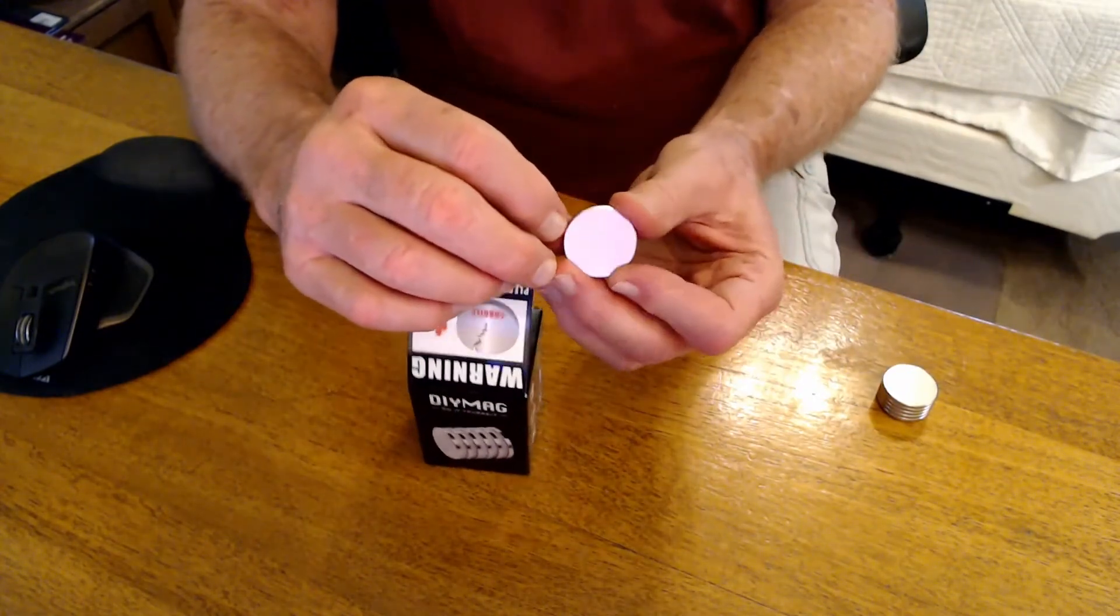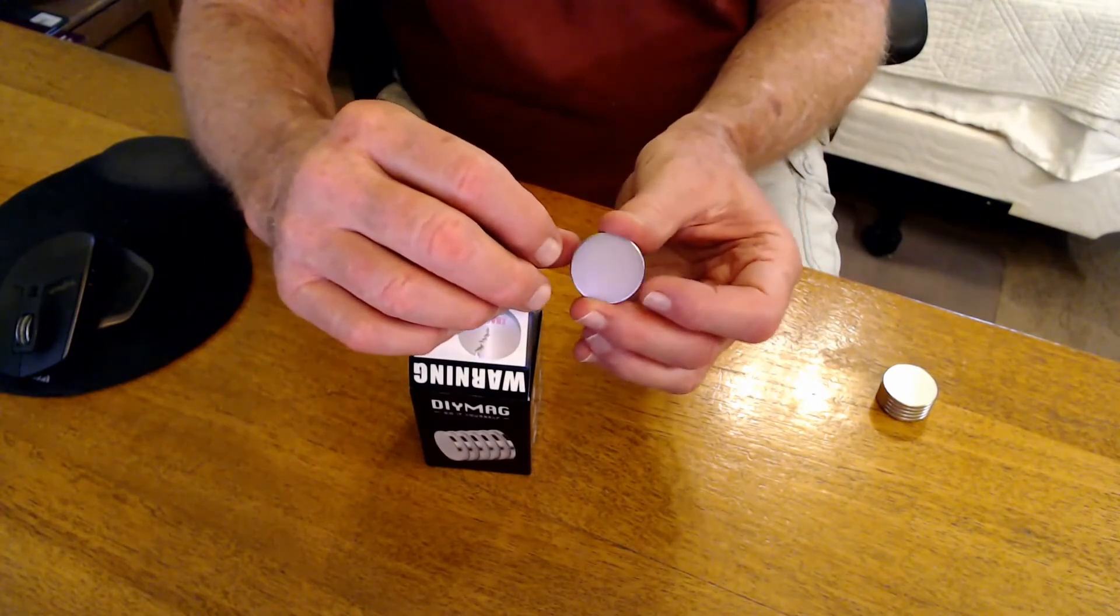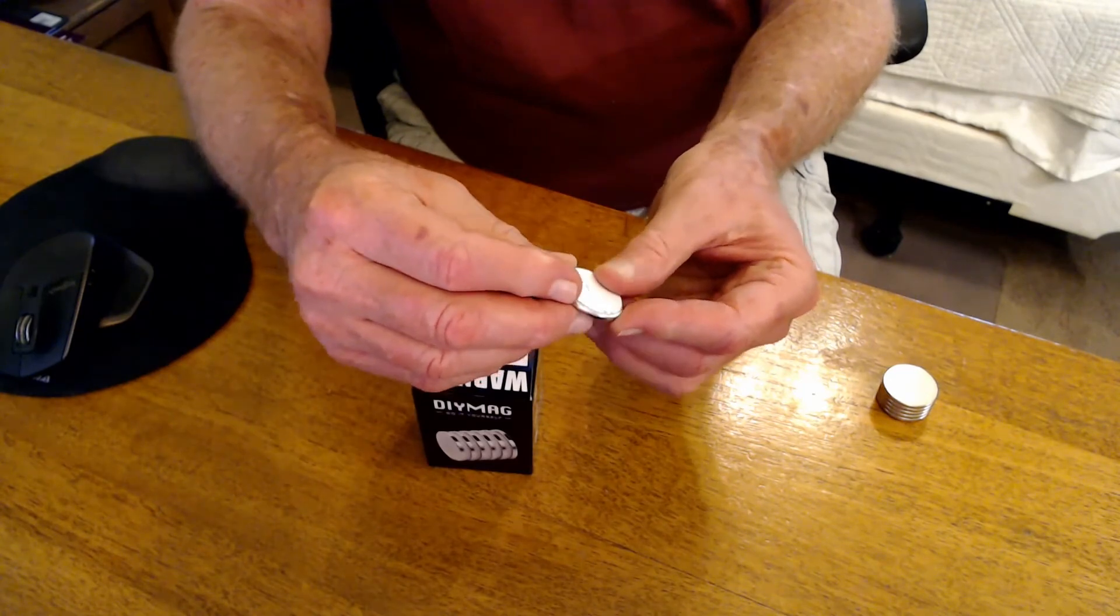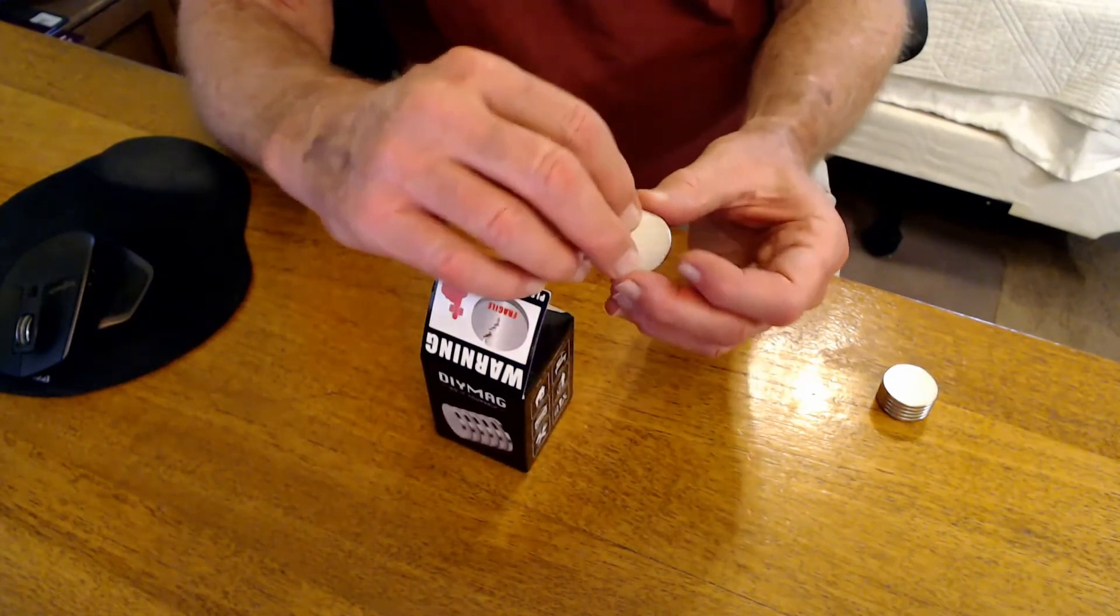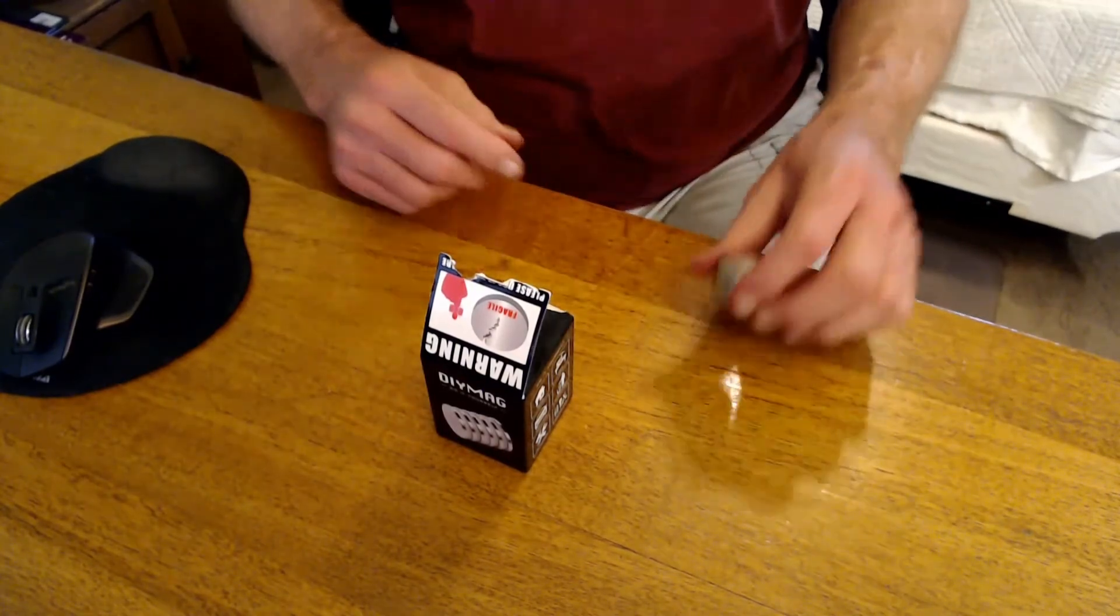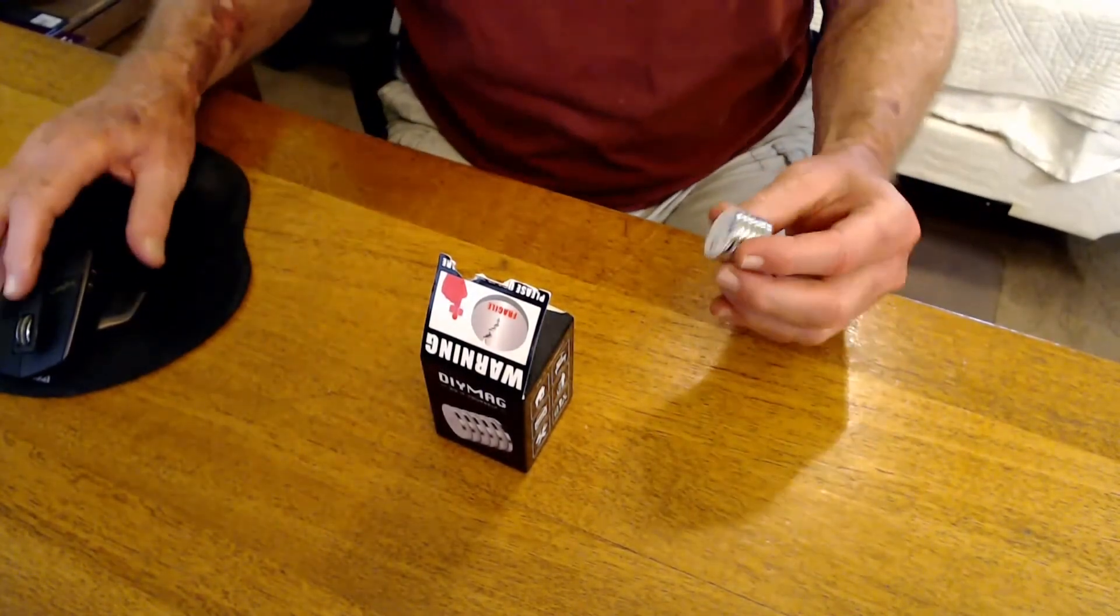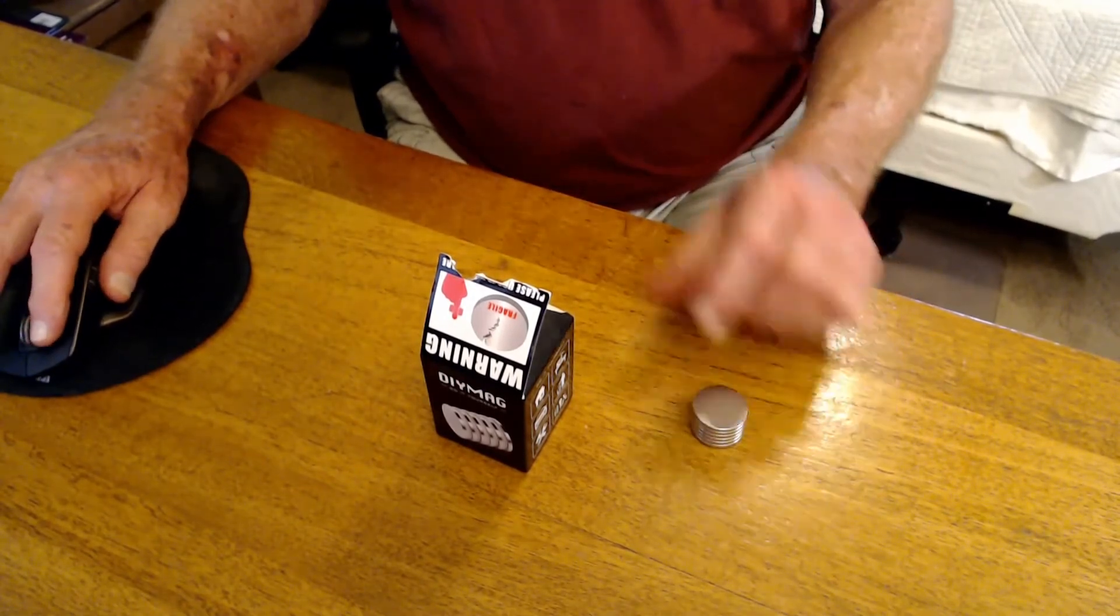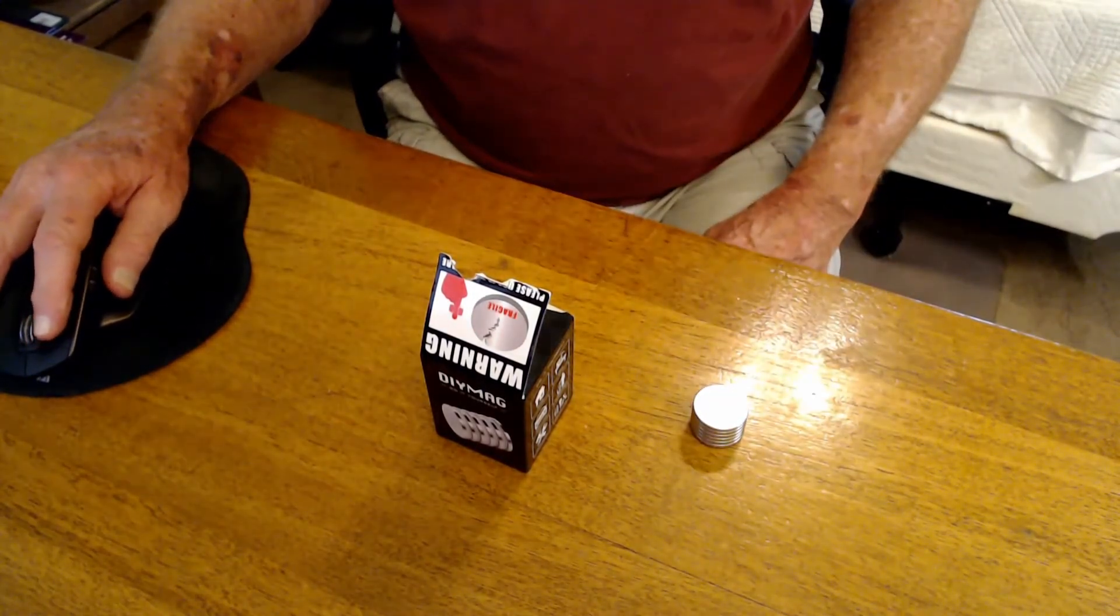They're about the size of a half dollar, I guess. They have an adhesive backing, which is separate. I've already applied these. You peel these off, and you put them on your frame, and then that attaches to the... If they go together too hard, they will snap because they're very brittle. So let's see what happens with these.